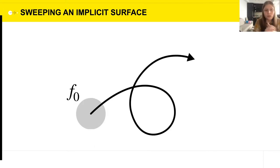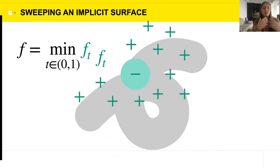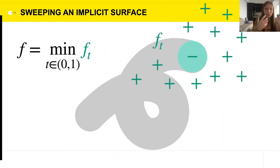Now similarly, the swept volume of a disk is basically a union of an infinite number of shapes, which we can parameterize by some time parameter t. And then the implicit function f, which we want to get, which represents the swept volume, will be the minimum of all these f_t. Well, how do we calculate this minimum?